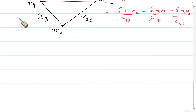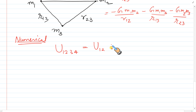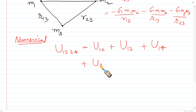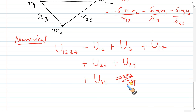Similarly, for 4 masses, all pair combinations لیتے ہیں: U(1,2,3,4) = U12 + U13 + U14 + U23 + U24 + U34. Starting from mass 1: (1,2), (1,3), (1,4); from mass 2: (2,3), (2,4); from mass 3: (3,4); mass 4 کے ساتھ کوئی نیا combination نہیں آتا۔